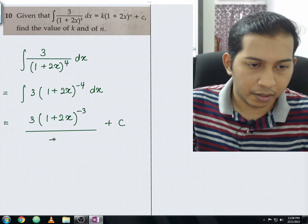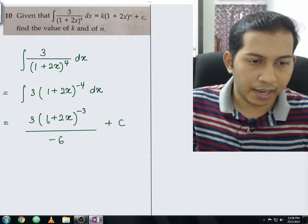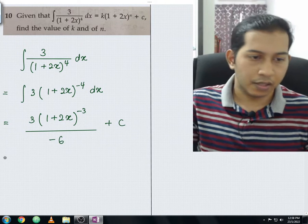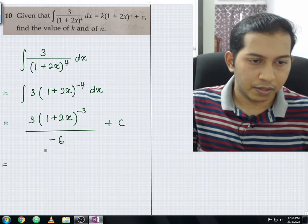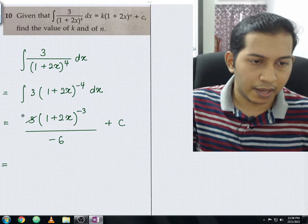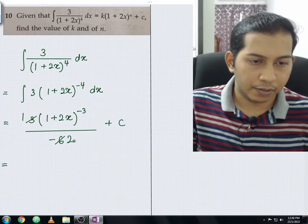So you'll be getting 3(1+2x) to the power of negative 3 divided by negative 6. For the next step, when you simplify this, 3 simplifies to 1 and 6 simplifies to 2. So 1 divided by negative 2.